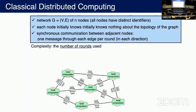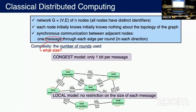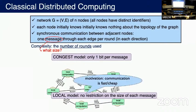Now I described briefly the model, but there is a very important thing: the size of the message. There are two different submodels. In the first one, each message is very small, only one bit. In the second model, there is no restriction on the size of the message. The second model, the local model, may look artificial, but it's actually even more well-studied because in many practical situations communication is very fast and cheap, and the real bottleneck is the number of rounds needed to solve a problem.